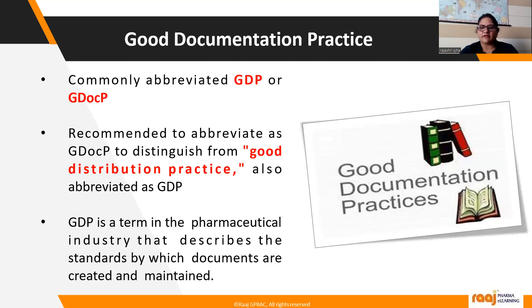GDP is commonly abbreviated as GDocP or GDP, but we recommend using GDocP to distinguish it from Good Distribution Practices and avoid duplication of abbreviations used in the industry. GDocP is a term in the pharmaceutical industry that describes the standards by which documents are created and maintained.